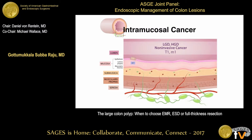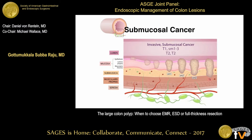Let me take you through the concepts of a lesion that is limited to the epithelium and what happens as it goes down. So here is an M1, or high-grade dysplasia, or low-grade dysplasia. It's a T1 lesion, and then it goes to M2 or M3. Once it penetrates the muscularis mucosa and enters the submucosa, the game changes.